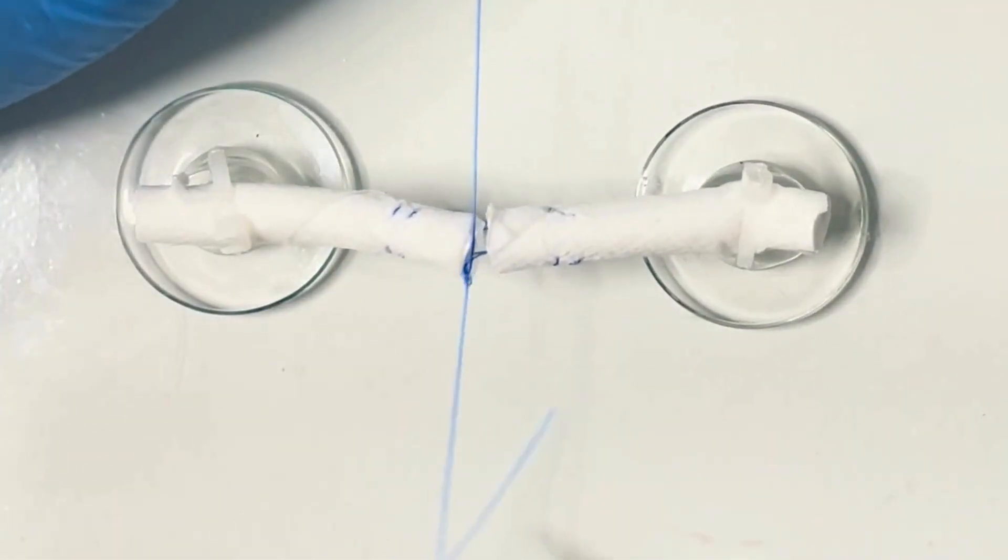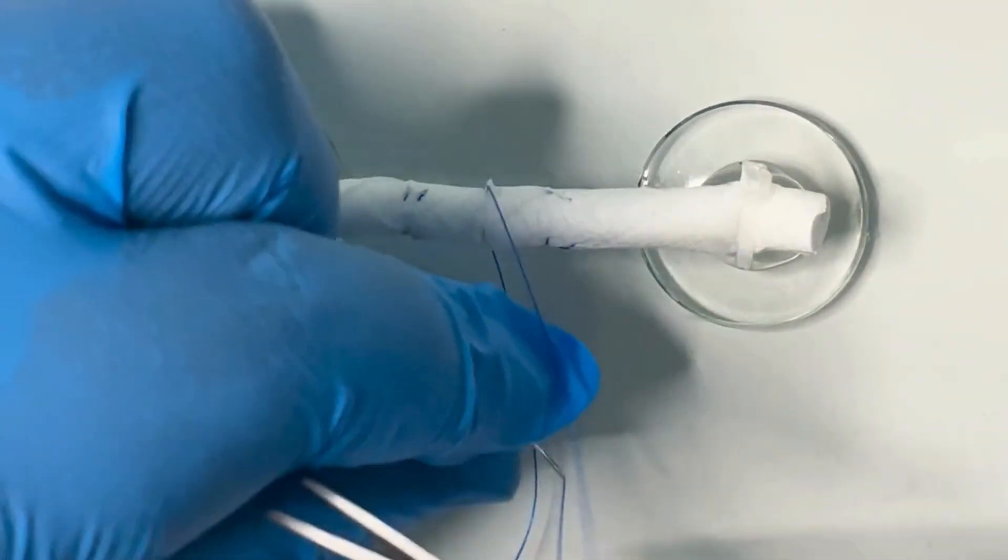Tie your knots in parallel to the cut at 90 degrees to the tendon direction.